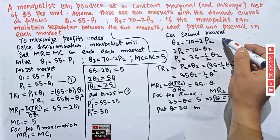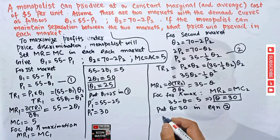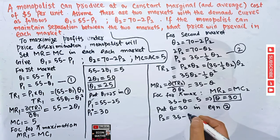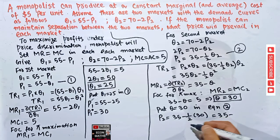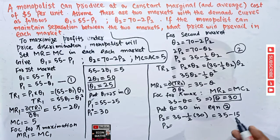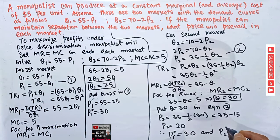Substituting Q2 = 30 into equation two: P2 = 35 - (1/2)(30) = 35 - 15 = 20. Therefore, the equilibrium price in the first market P1 = 30, and the equilibrium price in the second market P2 = 20. If you like these videos, please share and subscribe with your economics friends — that is the only motivation for me to keep going. You can also donate to the channel. Thank you.